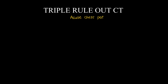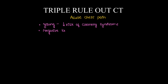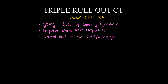Coming to triple rule-out CT, done in acute chest pain: it is indicated in young patients with lesser risk of acute coronary syndrome where we need to rule out other causes of chest pain, in cases of negative biomarkers where troponins have not been raised, and in cases of normal or non-specific ECG findings.